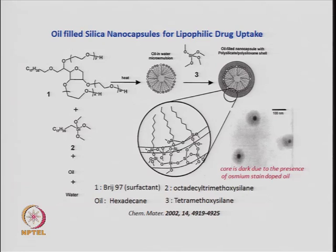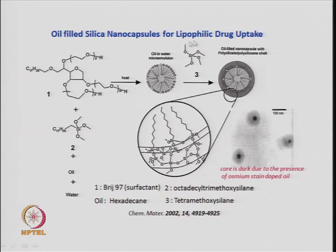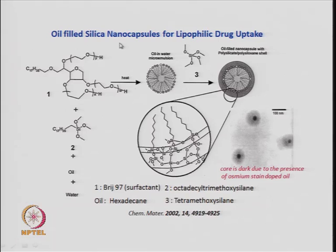Oil-filled silica nanocapsules can be made for carrying lipophilic drugs — drugs that like an oil-phase environment. The process uses a microemulsion: a non-ionic surfactant called Brij 97 is combined with hexadecane oil, octadecyl trimethoxy silane, and water. When mixed and heated, an oil-in-water microemulsion forms with the hexadecane oil inside and the hydrophobic chains of the surfactant pointing inward.